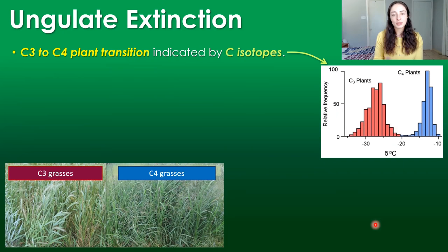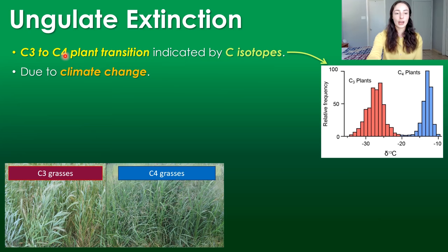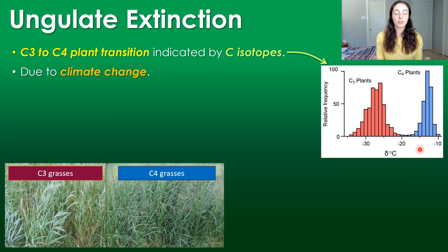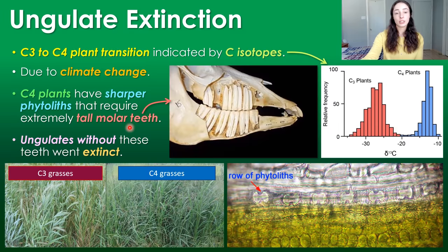Around six to seven million years ago there was a mass extinction of ungulates — but only specific types with specific types of teeth. The reason was a switch in plant type: due to climate change, C3 plants transitioned to mainly C4 plants in grassland areas. These two plant types take up carbon isotopes differently, making distinct carbon isotope signatures we can track in the rock record. Since C4 plants have sharper phytoliths, ungulates needed extremely tall and resistant molar teeth to survive. Those ungulates survived, but those without these extremely tall and resistant teeth went extinct.